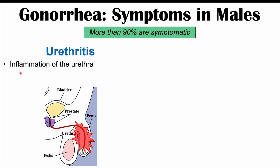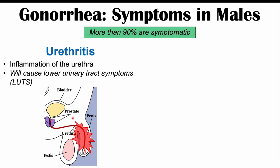Urethritis is inflammation of the urethra, and it leads to lower urinary tract symptoms. These include dysuria — a burning sensation when urinating — urinary frequency, meaning the patient feels like they have to urinate more frequently even though they may only produce a small amount, and urinary urgency, meaning they feel they have to urinate very quickly. These symptoms can look like a common urinary tract infection.